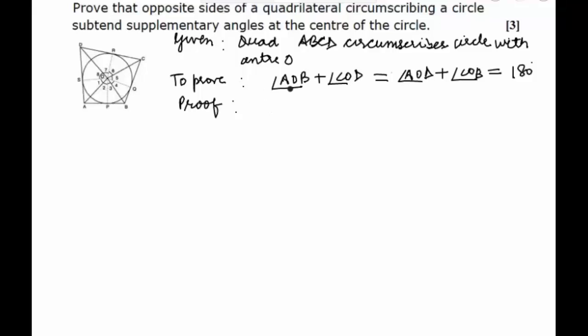We say that angle 1 will be equal to angle 2, since two tangents drawn from an external point to a circle subtend equal angles at the center.